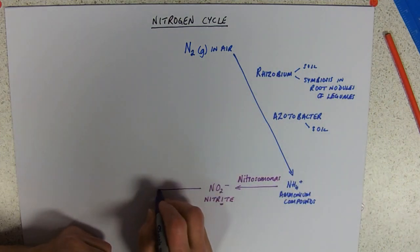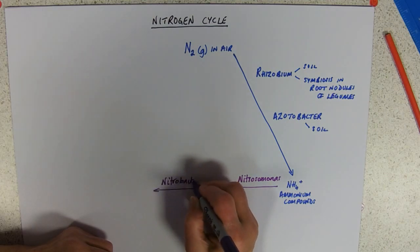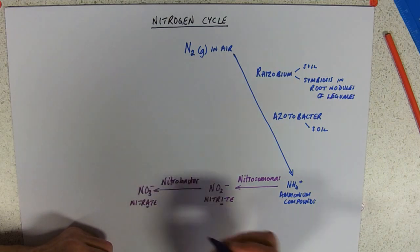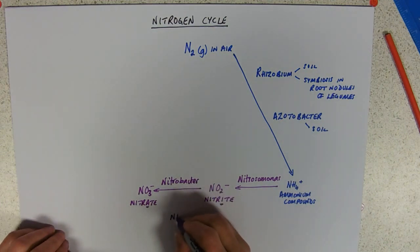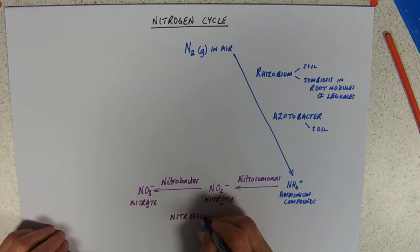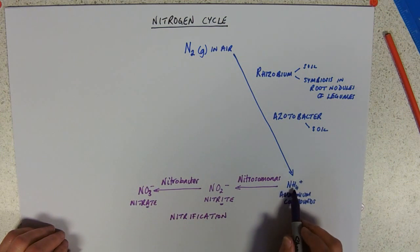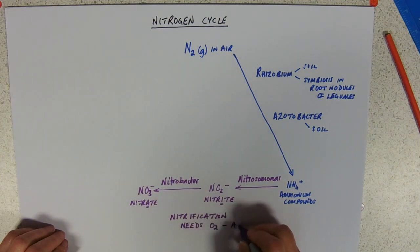And then, further conversion by Nitrobacter into nitrite. Sorry, nitrate. See what I mean about being careful. Now, that overall process is called nitrification. It's not rocket science, but we've taken a hydrogen-containing nitrogen compound and added oxygen to it. So this needs oxygen. It's an aerobic process.